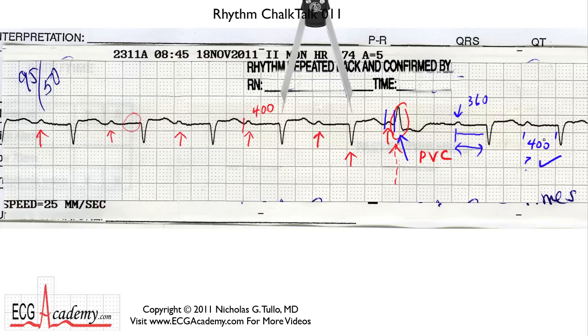This is not the same as Wenckebach, but it is a reflection that the AV node conducts better at slower rates and worse at faster rates. And the coupling interval from one beat to the next certainly plays a role in how the AV node conducts.